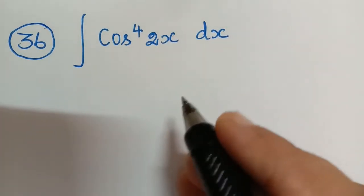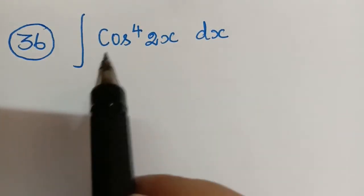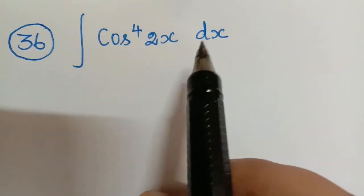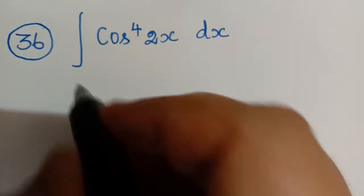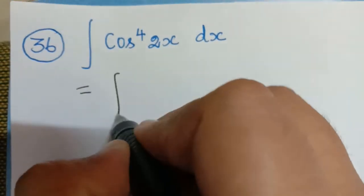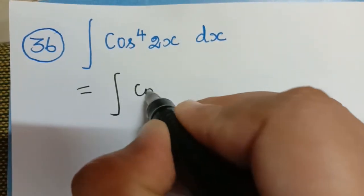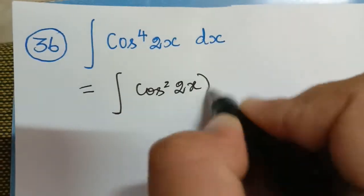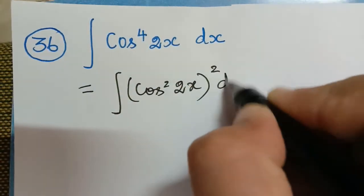Hello students. We shall now integrate cos⁴(2x) dx. This can be rewritten as the integral of cos²(2x) the whole squared dx.